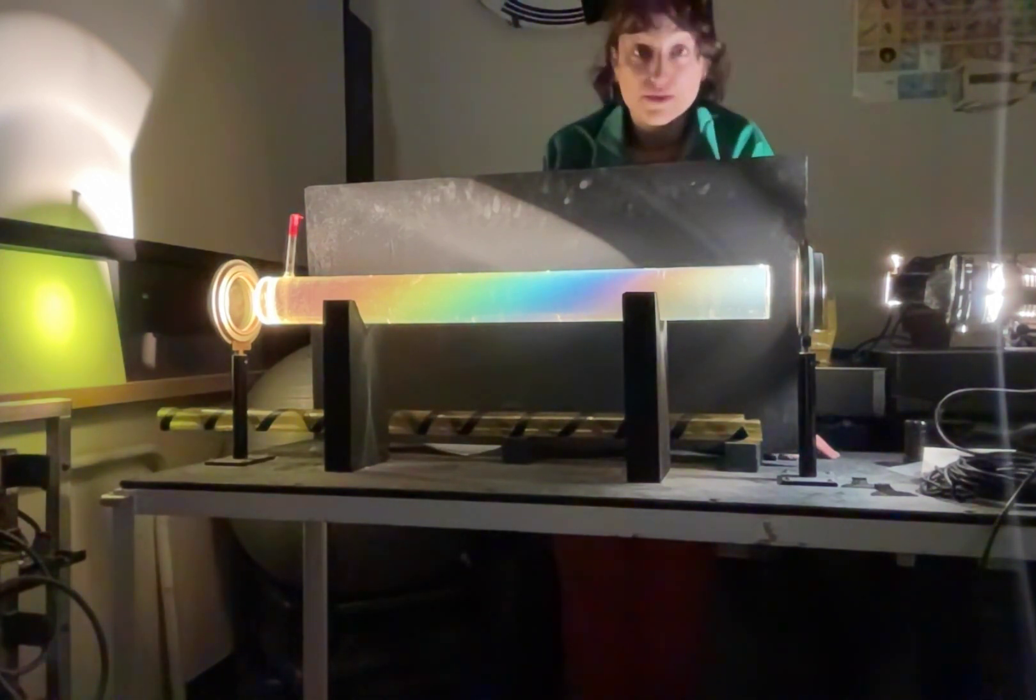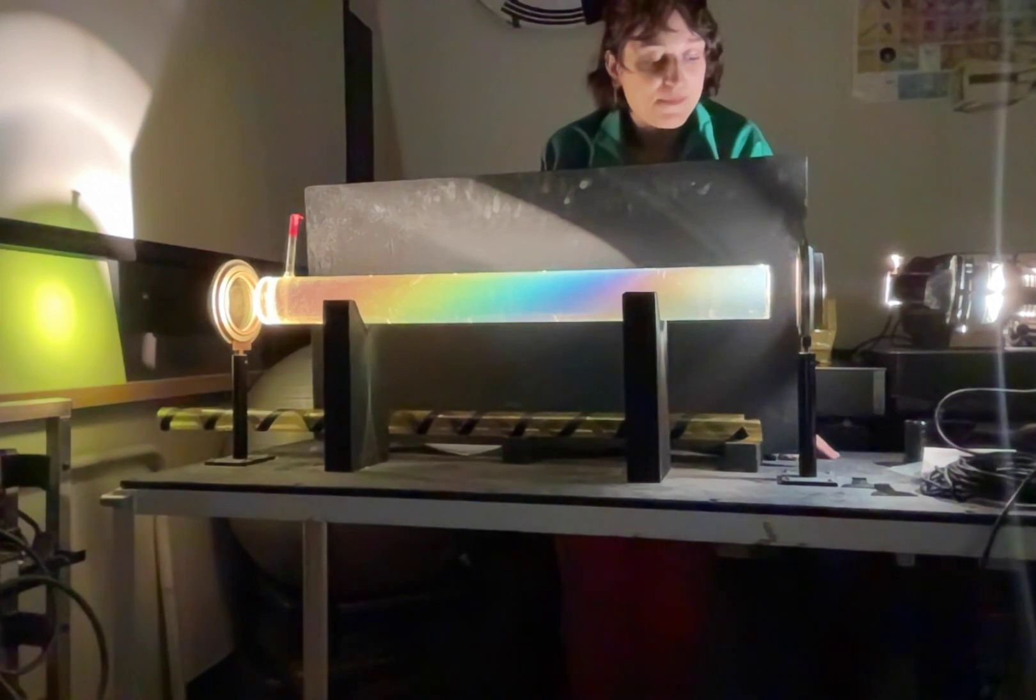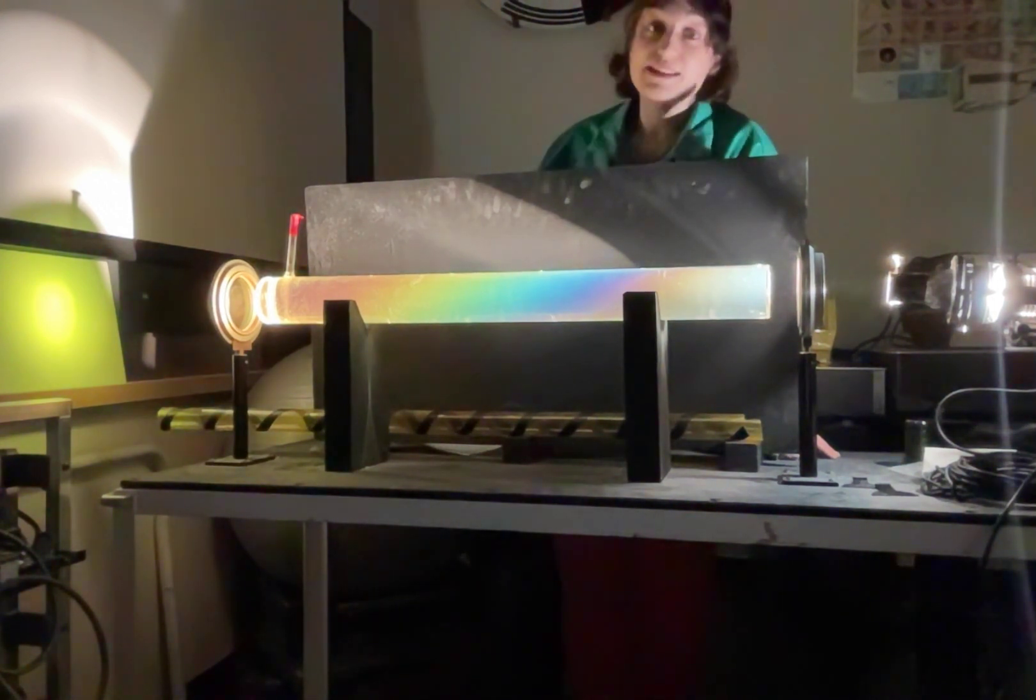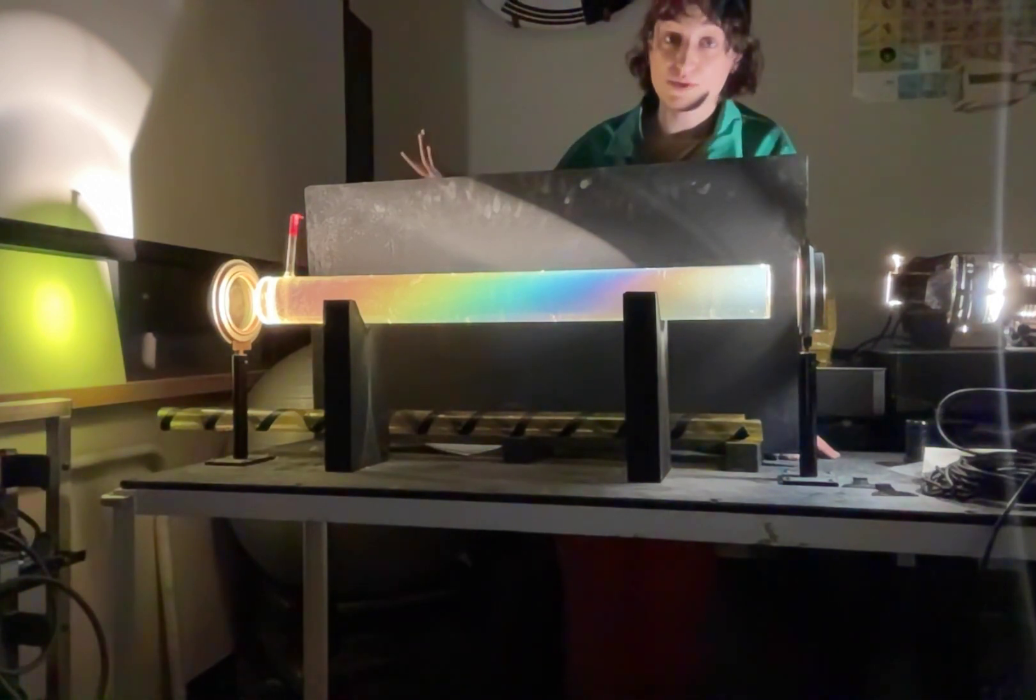And due to sugar's helical structure, so dextrose is a helical molecule, when light scatters off of it, its angle of polarization will also change because of this helical structure.